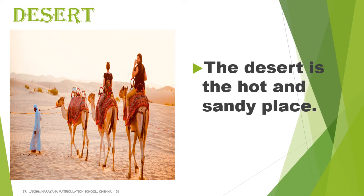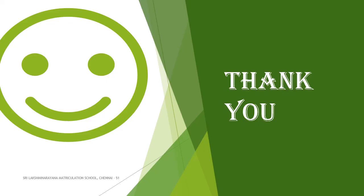Desert. A desert is a hot and sandy land. There are hills of sand called sand dunes. Very little water is found in a desert. Cactus plants grow here. Camel is used for traveling in the desert, so it is called the ship of the desert. Very less people live here. Thank you, children.